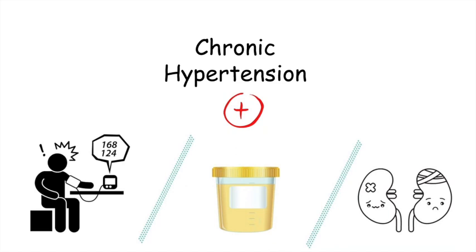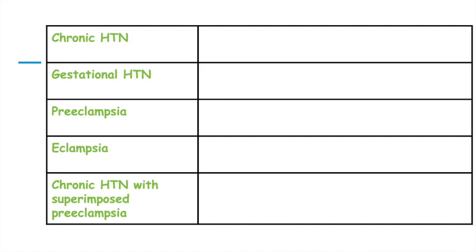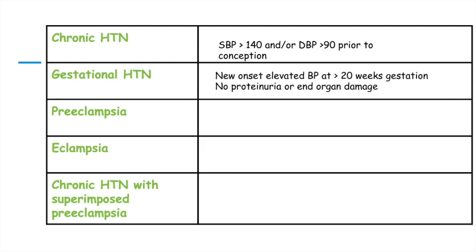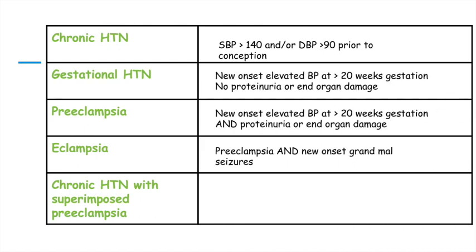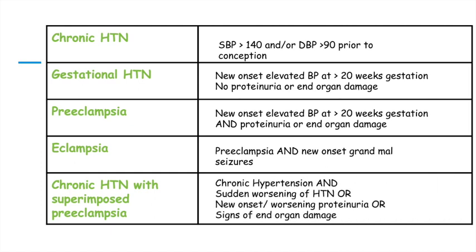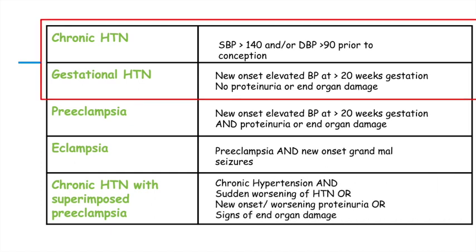Here is a summary of everything we talked about. All these conditions include elevated blood pressures. However, chronic hypertension occurs at less than 20 weeks gestation, while the others occur after 20 weeks. Chronic hypertension and gestational hypertension are the same except for their timing — in gestational hypertension, elevated blood pressures occur at greater than 20 weeks, while in chronic hypertension it's a chronic disorder.